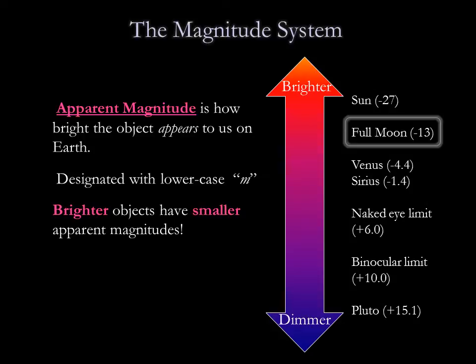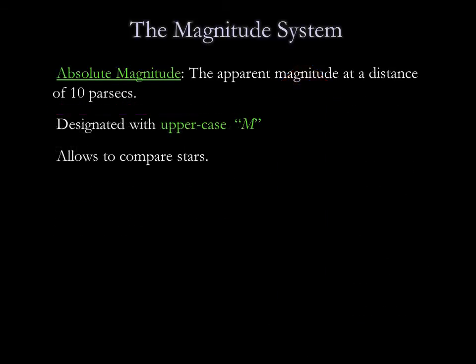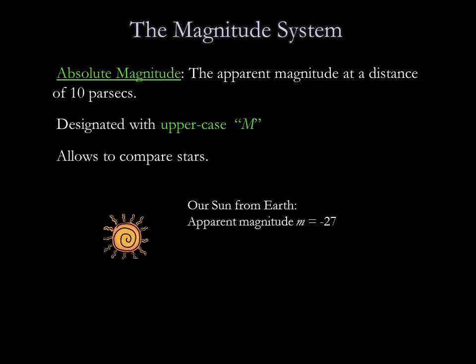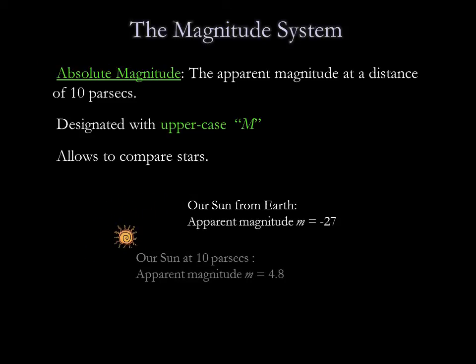Astronomers use a more precisely defined system today. The modern magnitude system also defines absolute magnitudes as a way of describing stellar luminosities. A star's absolute magnitude is the apparent magnitude it would have if it were at a distance of 10 parsecs from Earth. We denote absolute magnitudes with an uppercase M. For example, the sun's apparent magnitude — how bright it appears to us — is minus 27. If we were to move the sun 10 parsecs away, it would appear dimmer and we would measure an apparent magnitude of 4.8. Therefore, the absolute magnitude of the sun is 4.8.